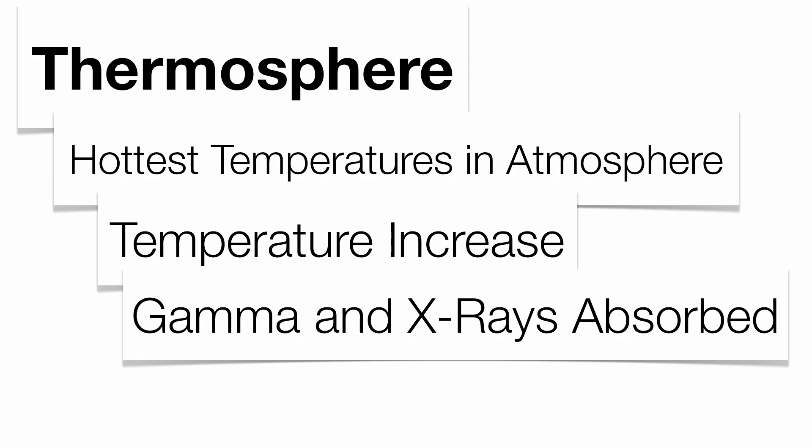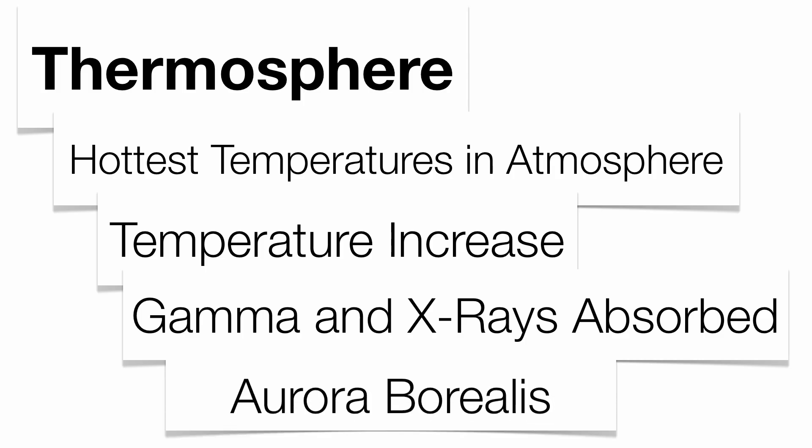Those gamma rays and X-rays get absorbed by the thermosphere, making it some of the hottest temperatures in the atmosphere. If you're lucky enough to see the northern lights — the aurora borealis — or the aurora australis in the southern hemisphere, those are taking place in the thermosphere.